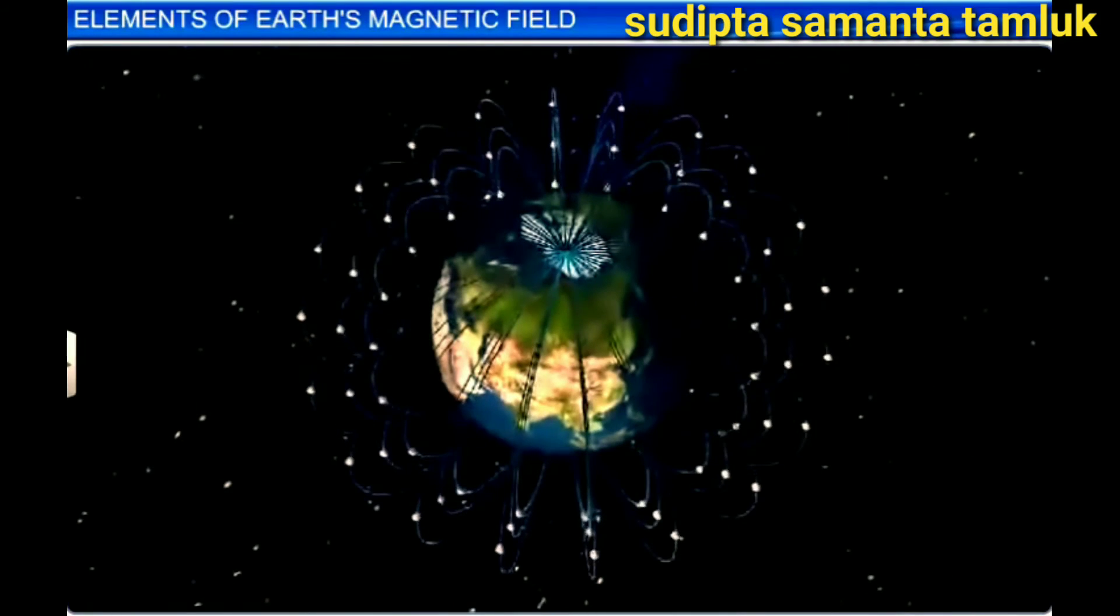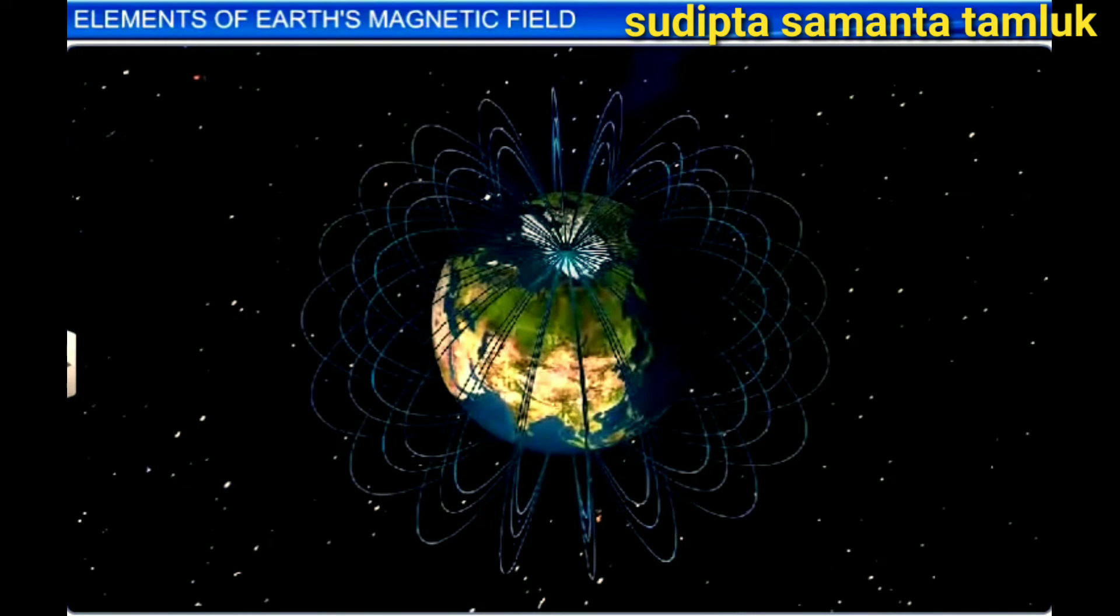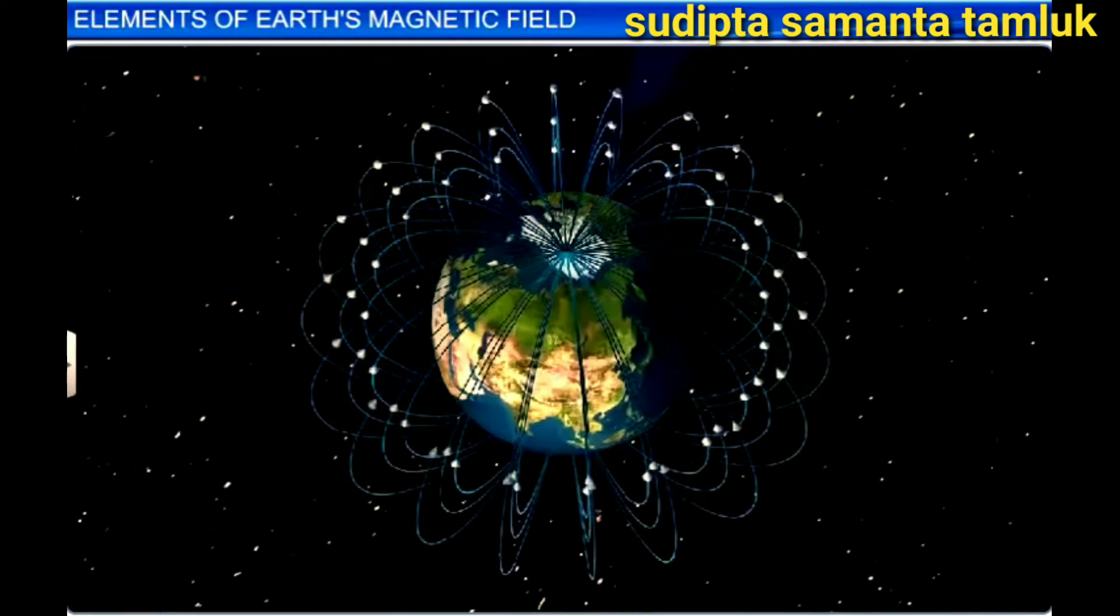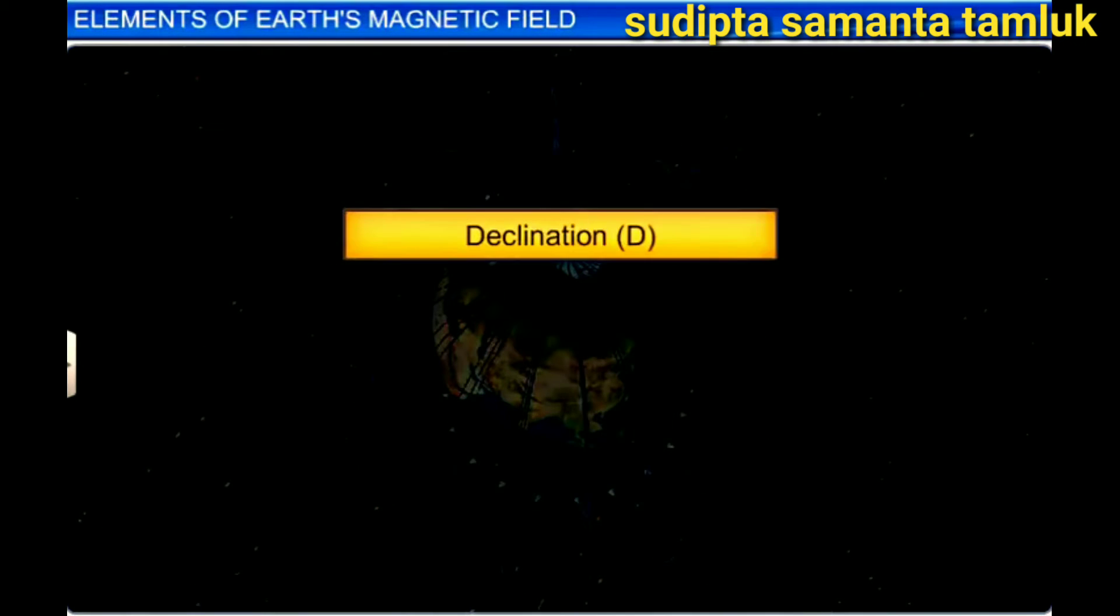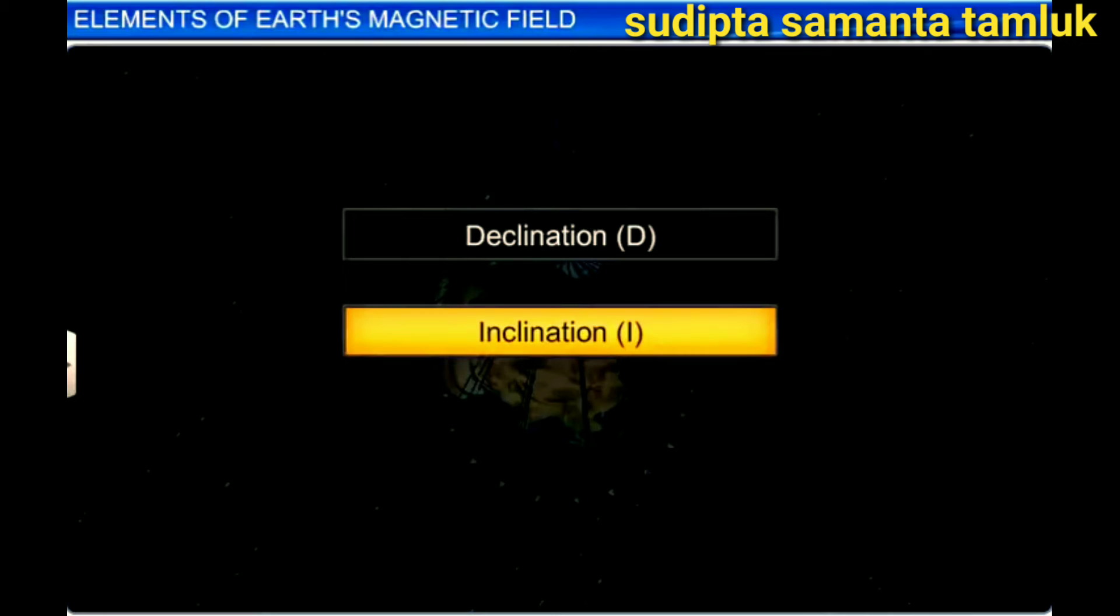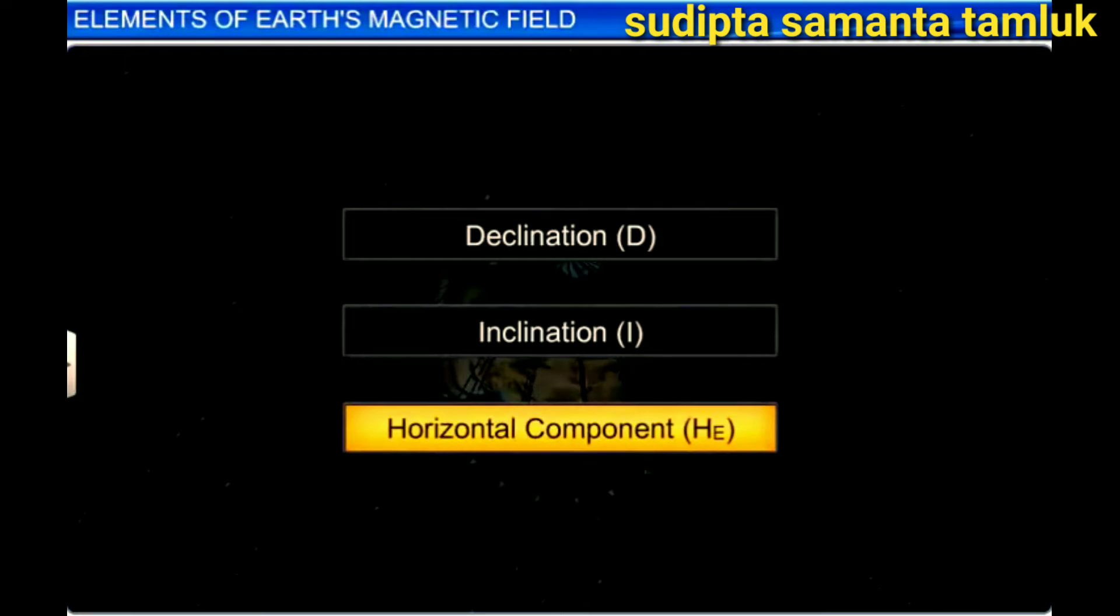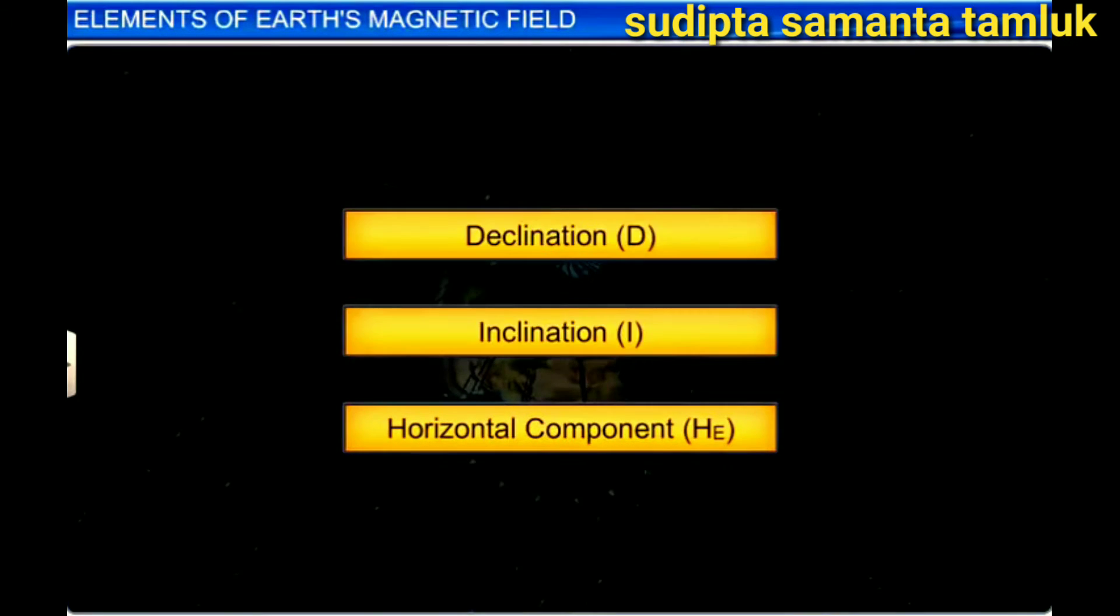To completely describe the magnetic field at any point on the surface of the Earth, we have to specify its three elements at that point. Namely, Declination D, Angle of Dip or Inclination I, and Horizontal Component of the Earth's Magnetic Field HE. First, the declination.